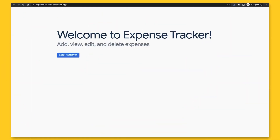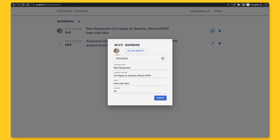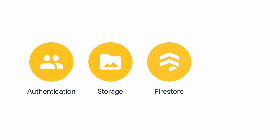As a recap of the first video, we built an MVP for our expense tracker. We implemented functionality for a user to create an account and log in, as well as add, view, edit, and delete expenses. We did so using Firebase Authentication, Storage, and Firestore, and after building all of that, we deployed our web app to Firebase Hosting so we can share it with friends.